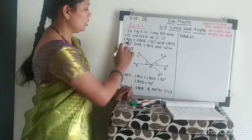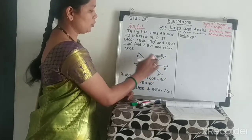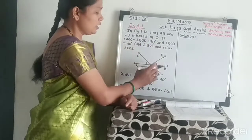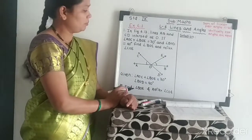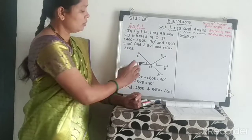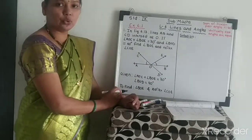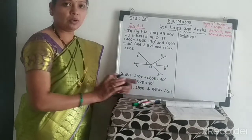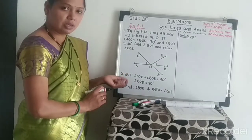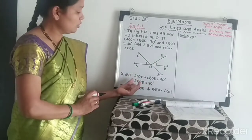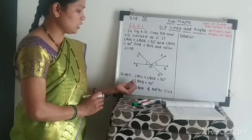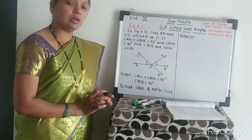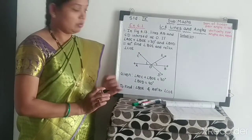In question 1, from figure 6.13, lines AB and CD intersect at O. Given: angle AOC plus angle BOE equals 70 degrees, and angle BOD equals 40 degrees. We need to find angle BOE and reflex angle COE. In the given part: angle AOC + angle BOE = 70°, angle BOD = 40°. To find: angle BOE and reflex angle COE.